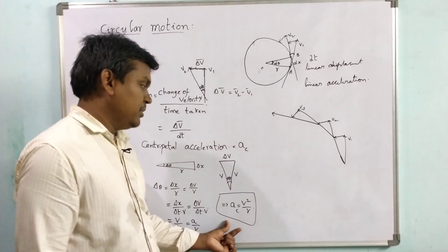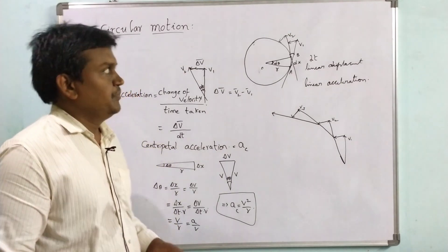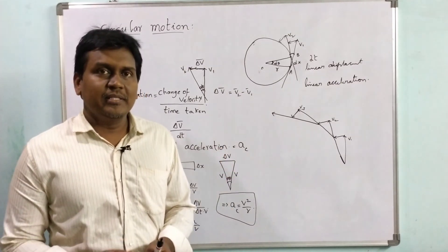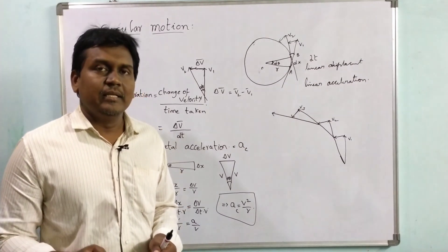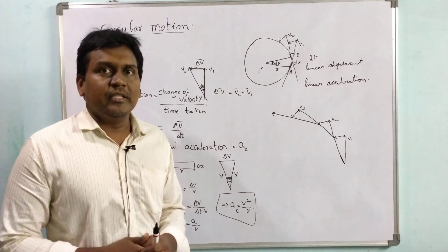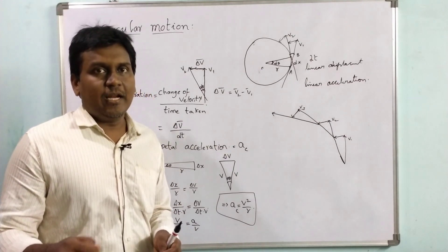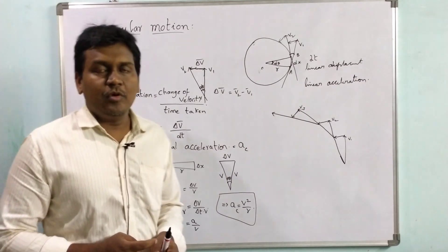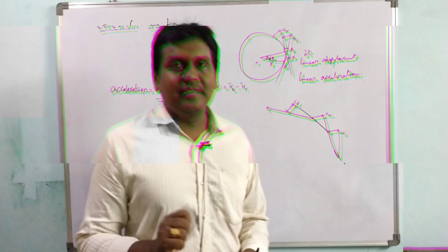This is a very famous formula for centripetal acceleration. When a particle is moving along a circle, centripetal acceleration is responsible for the particle to move in a circle. So this is about circular motion and centripetal acceleration.